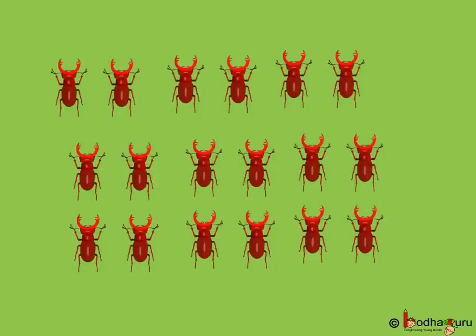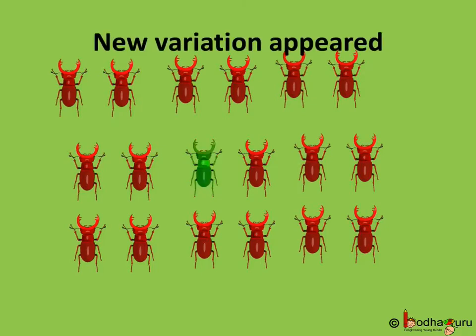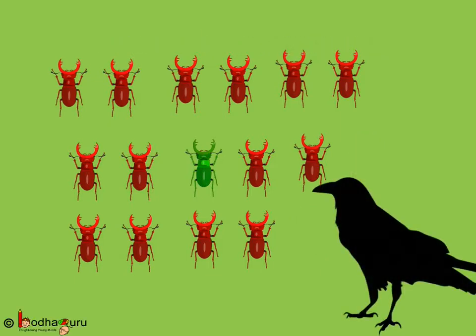Let us take a few examples. Say, some red beetles live in a green bush. As we already know, in sexual reproduction there is a scope for generating variations. Say, suddenly a new variation of green beetle appears. Now, as we know, crows and other birds eat beetles. But a green beetle can easily hide in the green bushes and thus have higher chances of survival compared to the red ones.